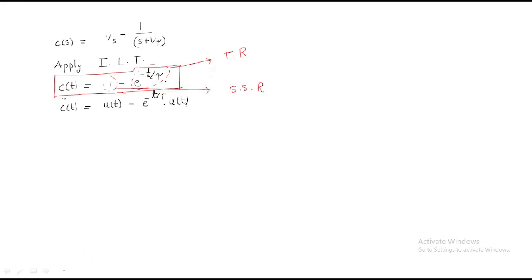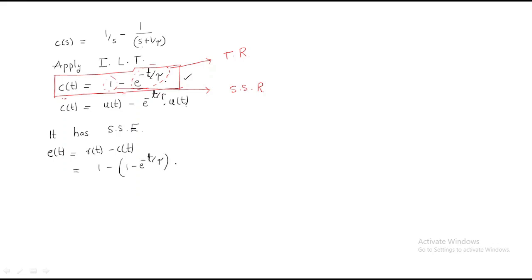Since we have a steady-state response, the system has a steady-state error. The error is defined as input minus output. The reference input r(t) = u(t) = 1, and the output C(t) = 1 − e^(−t/τ), so the error e(t) = e^(−t/τ).